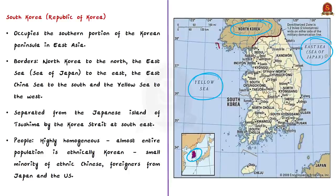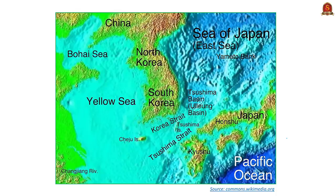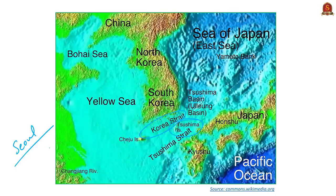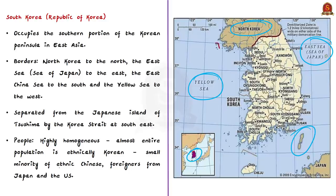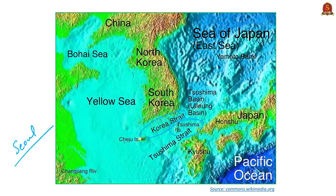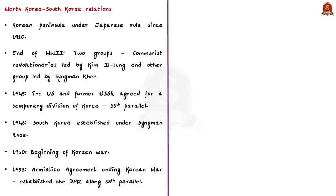South Korea is bordered by the East China Sea to the south and the Yellow Sea to the west. To the southeast it is separated from the Japanese island of Tsushima by the Korea Strait. South Korea makes up about 45 percent of the land area of the peninsula, with Seoul as its capital. The population of South Korea is highly homogeneous — almost entirely ethnically Korean — with a small minority of ethnic Chinese and some foreigners from Japan and the United States.